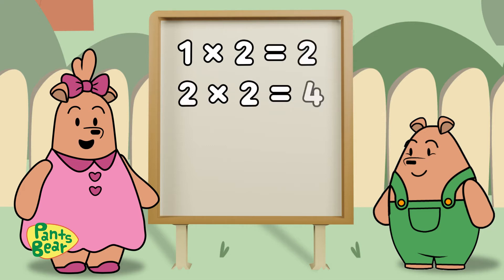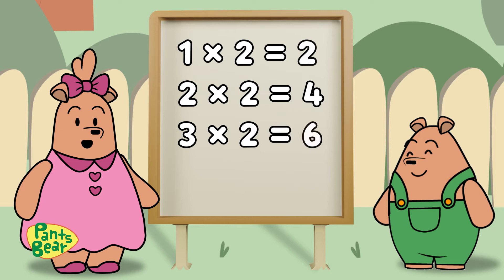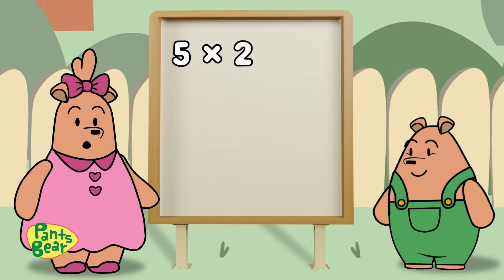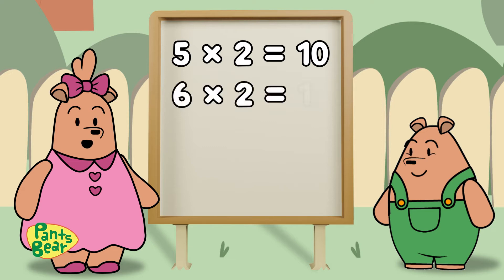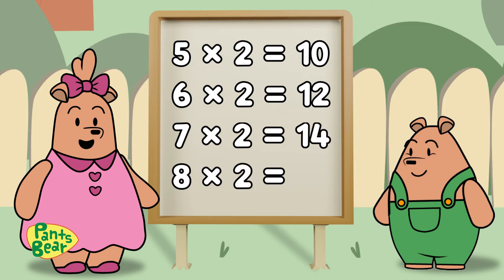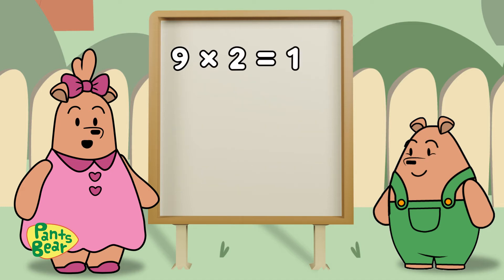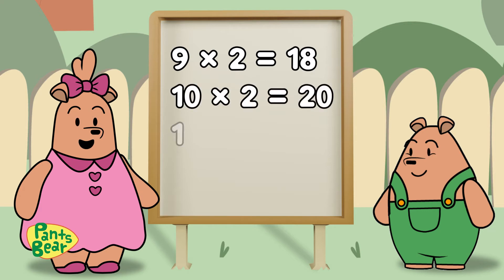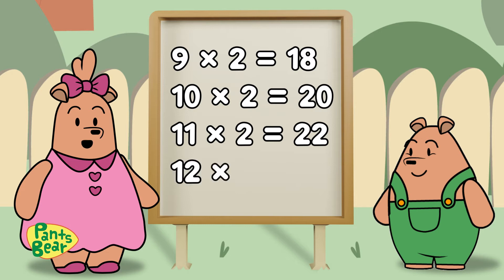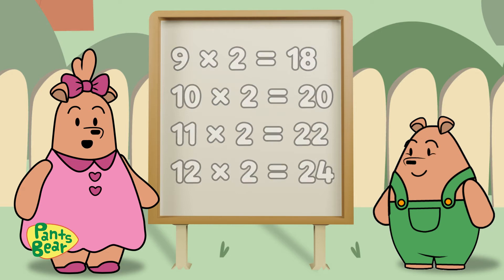Let's learn the multiplication of 2. 1×2=2, 2×2=4, 3×2=6, 4×2=8, 5×2=10, 6×2=12, 7×2=14, 8×2=16, 9×2=18, 10×2=20, 11×2=22, 12×2=24. Goodie!